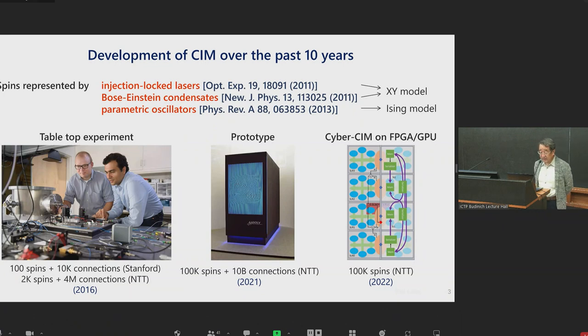The research on CIM has started around 2010. The first proposal is actually to use injection locked lasers or Bose-Einstein condensate to represent spins. In this case, classical XY spin model is implemented. Then a few years later, our use of degenerate optical parametric oscillator has been proposed. In this case, a classical Ising spin is implemented on this device.